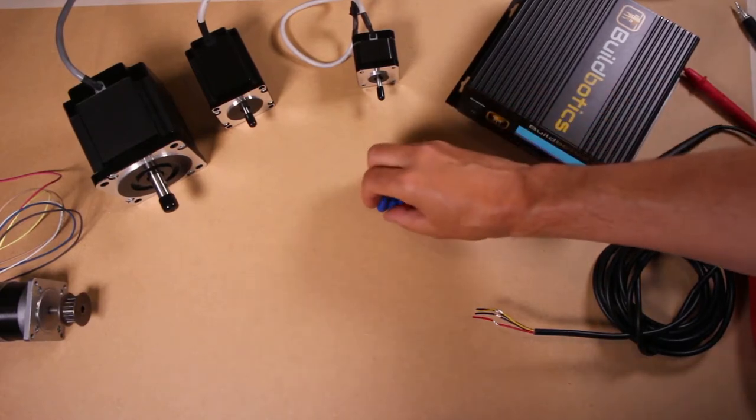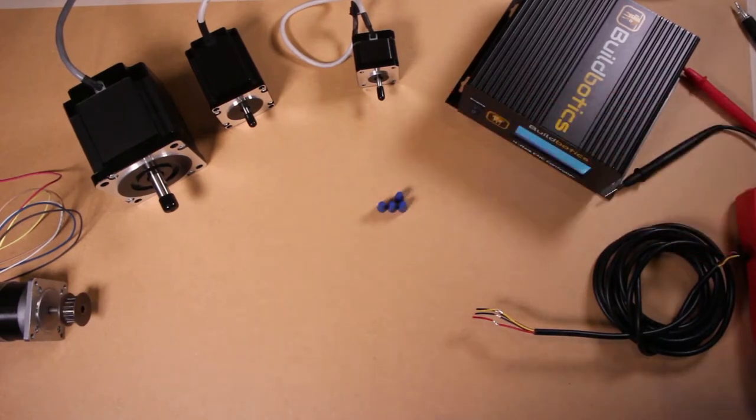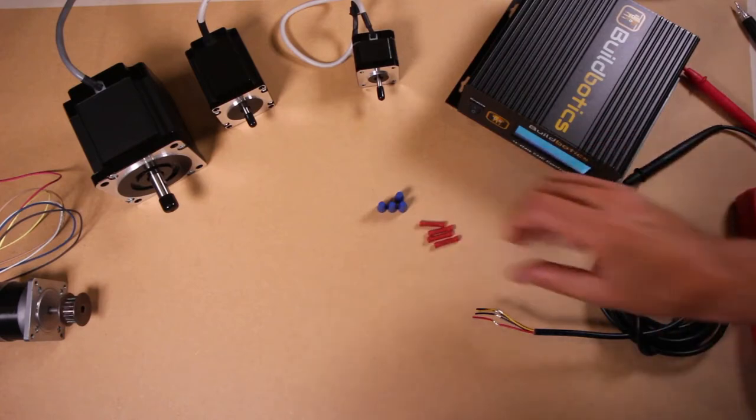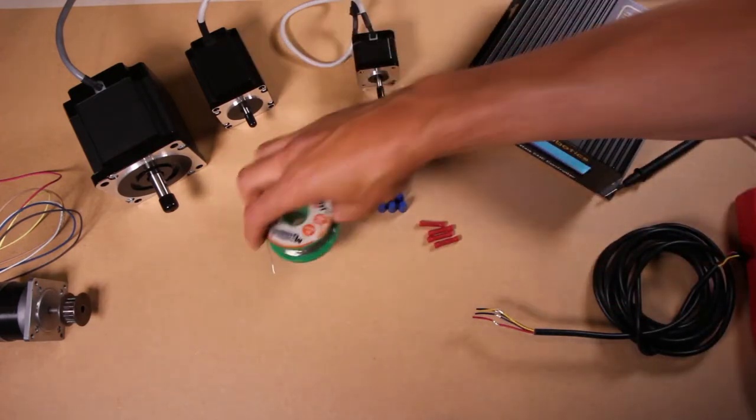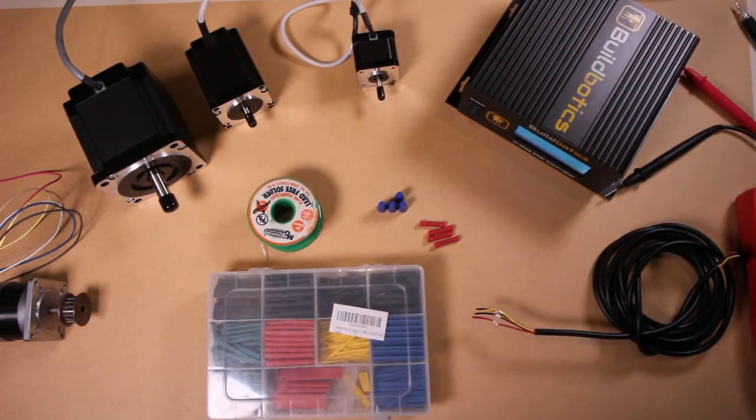The simplest method uses these wire nuts. The next method will use butt connectors. And finally, we will use solder and heat shrink tubing to make the nicest connection of all.